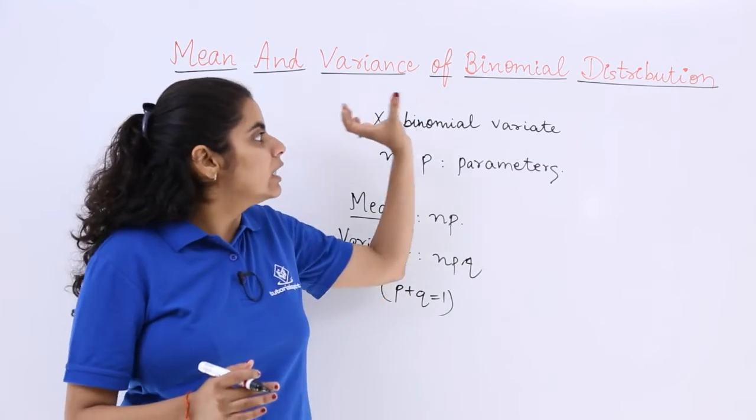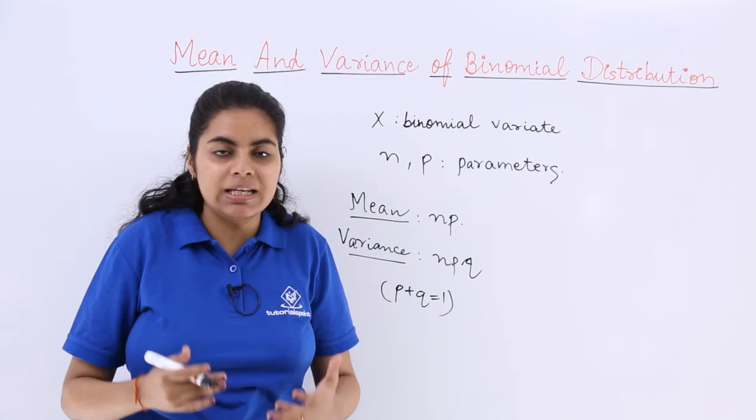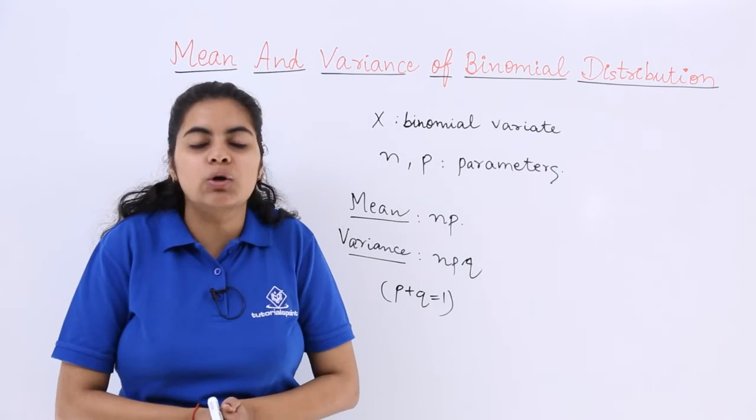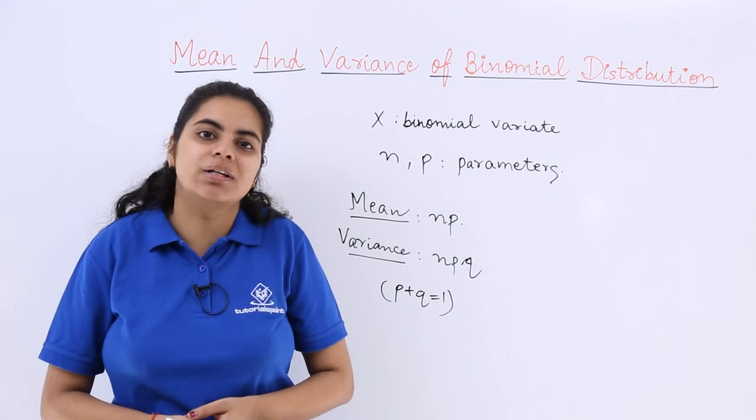This covers the mean and variance of binomial distribution. We will be seeing questions based on this to make things clearer.